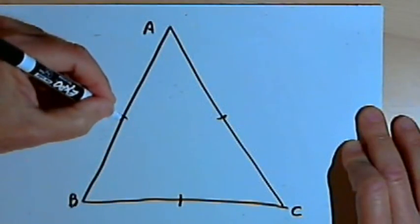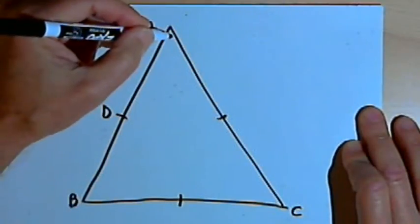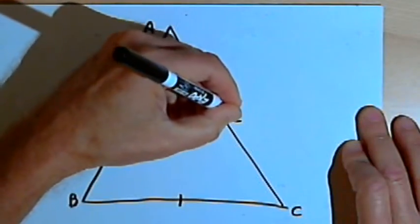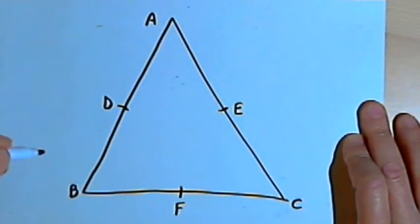I'll take the midpoint on side AB and label that as point D. On side AC, I'll label it as point E. And for side BC, I'll label the midpoint as point F.